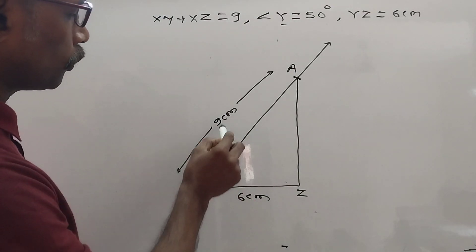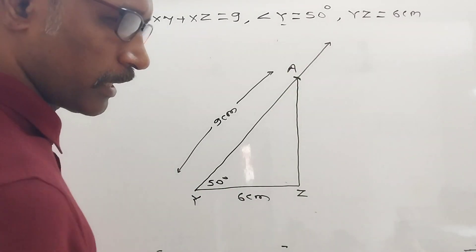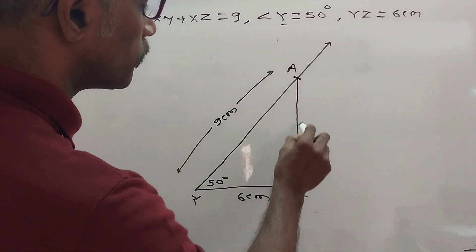Now these are known, this is unknown. So draw perpendicular bisector of AZ. Okay. Then take compass and take more than half distance.